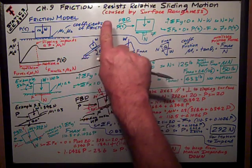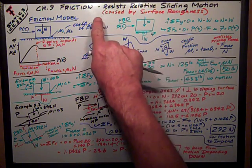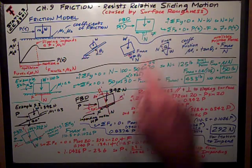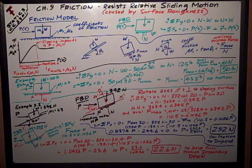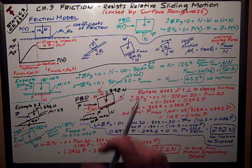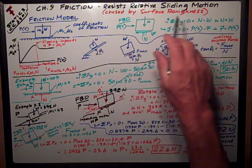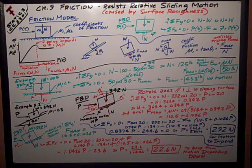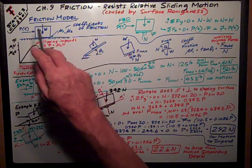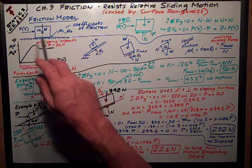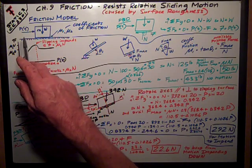Friction is a force that resists relative sliding motion. It's what keeps things from sliding relative to each other. It's caused by surface roughness. The friction model is based on these general concepts.